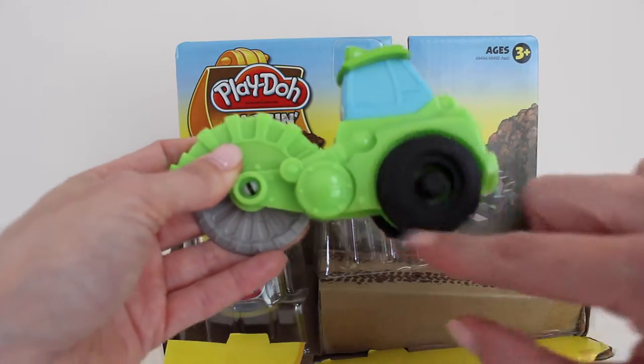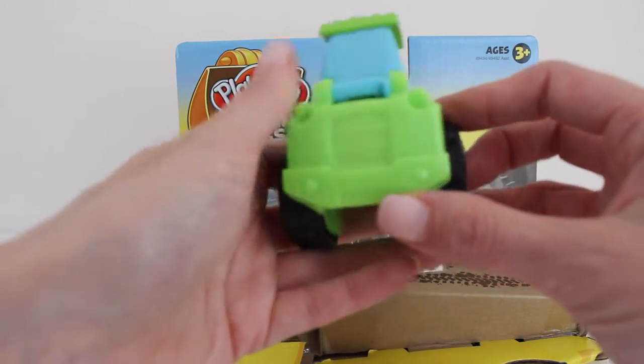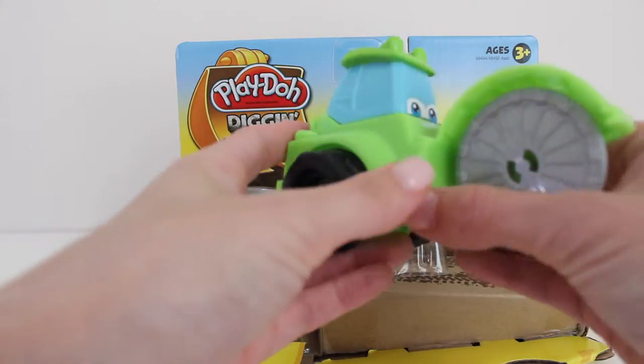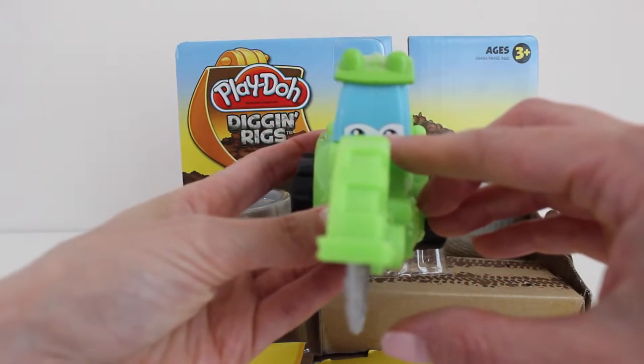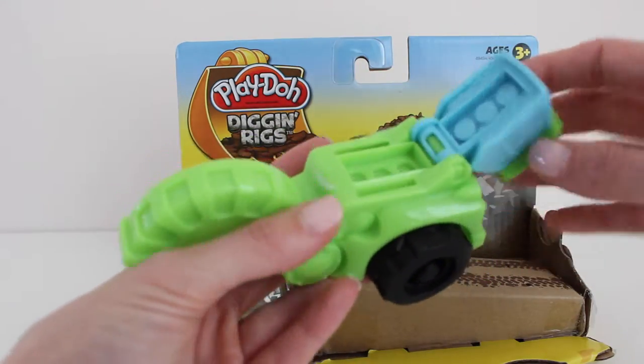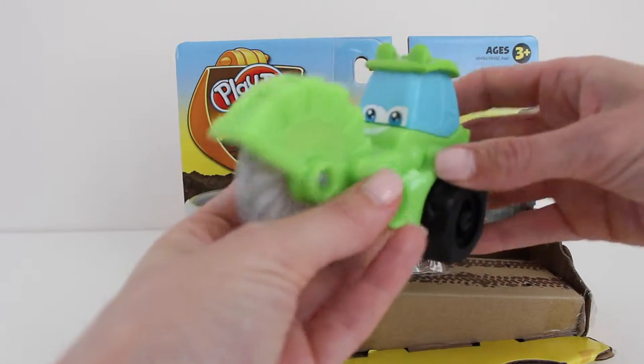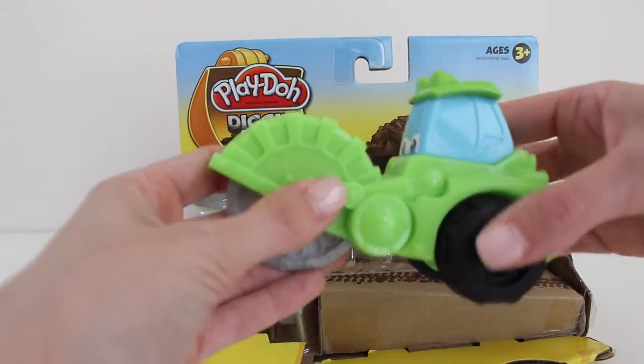He's got big black tires and he's got a cute little face. The top opens and we can use this to make some Play-Doh cement blocks. So cute.